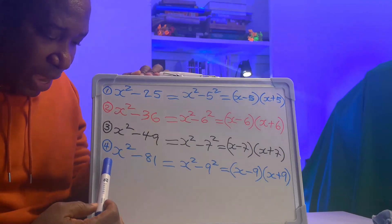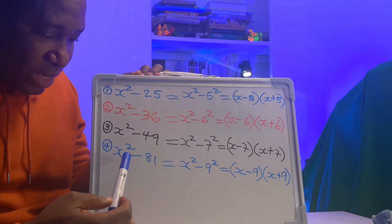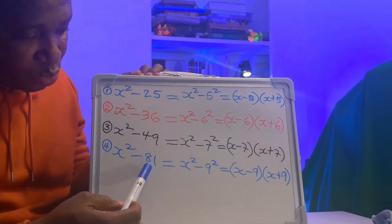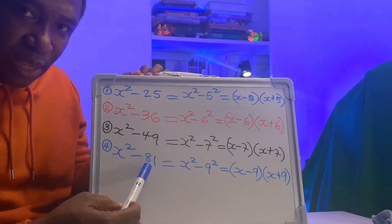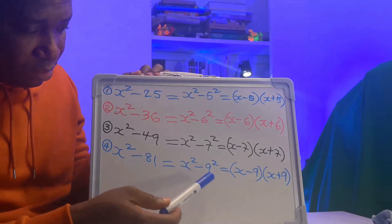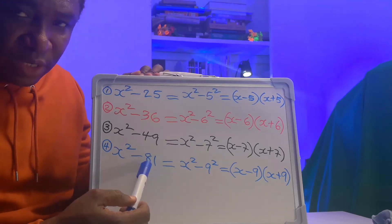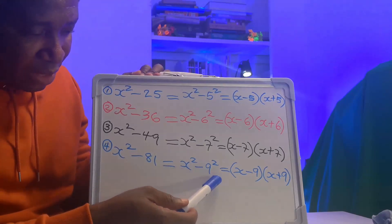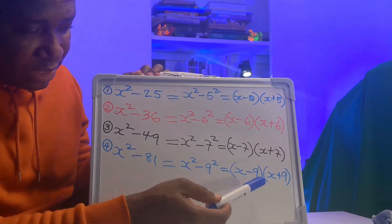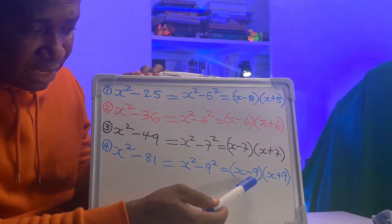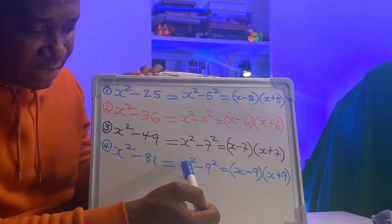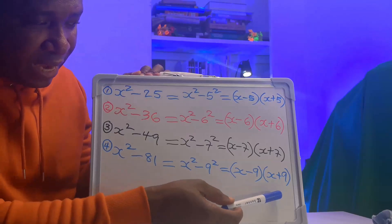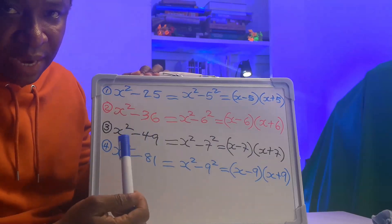In the fourth one, we have x squared minus 81. 81 is a perfect square because 9 squared gives 81. So x squared minus 9 squared gives us (x minus 9) in brackets times (x plus 9) in brackets.